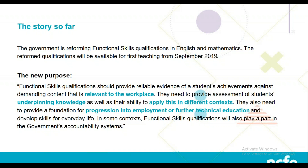At the moment, all awarding organisations are currently in the process of submission to Ofqual — we've submitted our sample papers and processes. Ofqual will review everything to ensure comparable outcomes across all awarding organisations, and will allow us to offer the new qualification if we hit the approval criteria. The first teaching of the new Functional Skills qualification will be available from September 2019, and on 31st August 2019 the last registrations on the current version will take place — after that, everyone must be registered on the reformed Functional Skills.